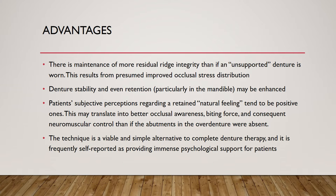The first advantage of overdentures is that it maintains ridge integrity rather than having an unsupported denture. It results from improved occlusal stress distribution — even when only two teeth are present in the arch, there is some stress distribution on those teeth, which is less compared to a fully edentulous arch with a complete denture.